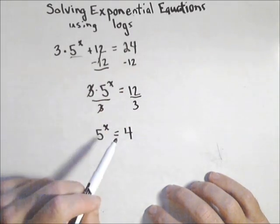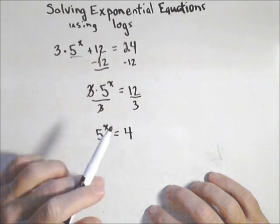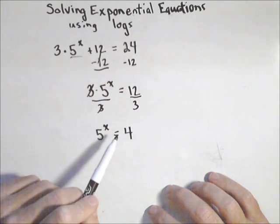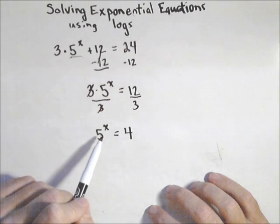Now, it's hard to write four as a base five. So here's the point where we can either take the log of both sides or use our definition of log to rewrite it.